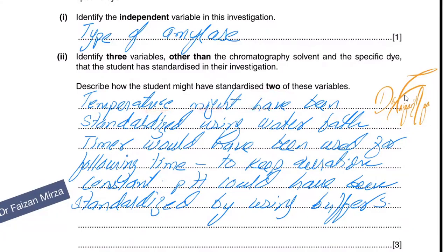So temperature might have been standardized, the temperature might have been standardized using a water bath. Timer would have been used for controlling time. pH could have been standardized using buffers. So you just need to add any description of any two, but you have to identify three. So although I have stated three and three both.